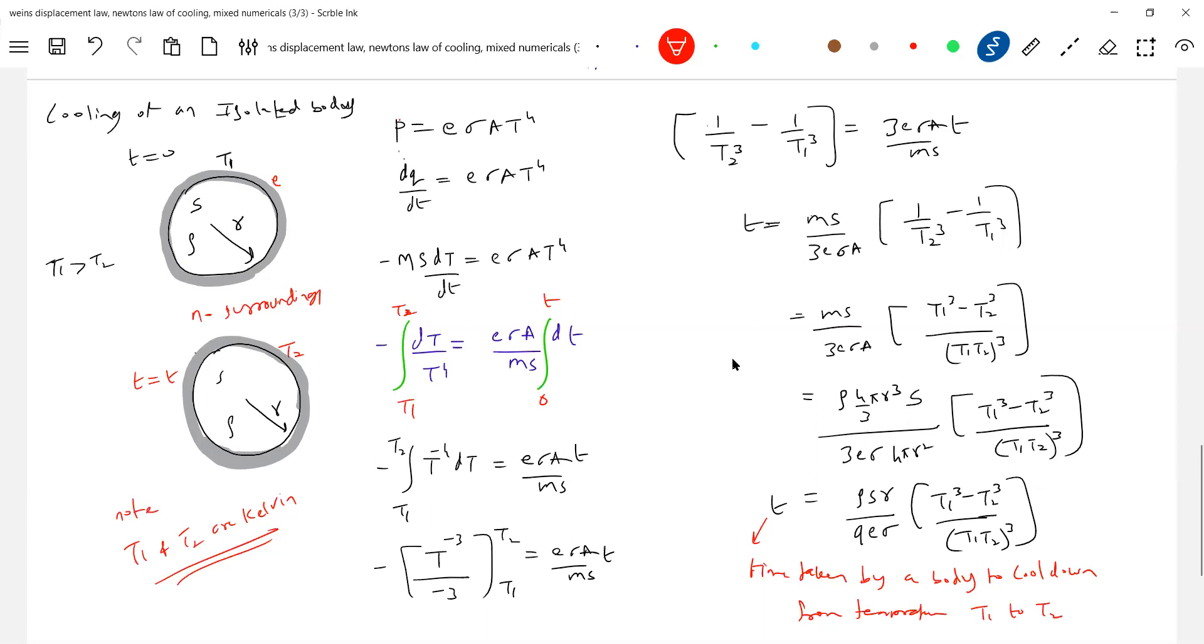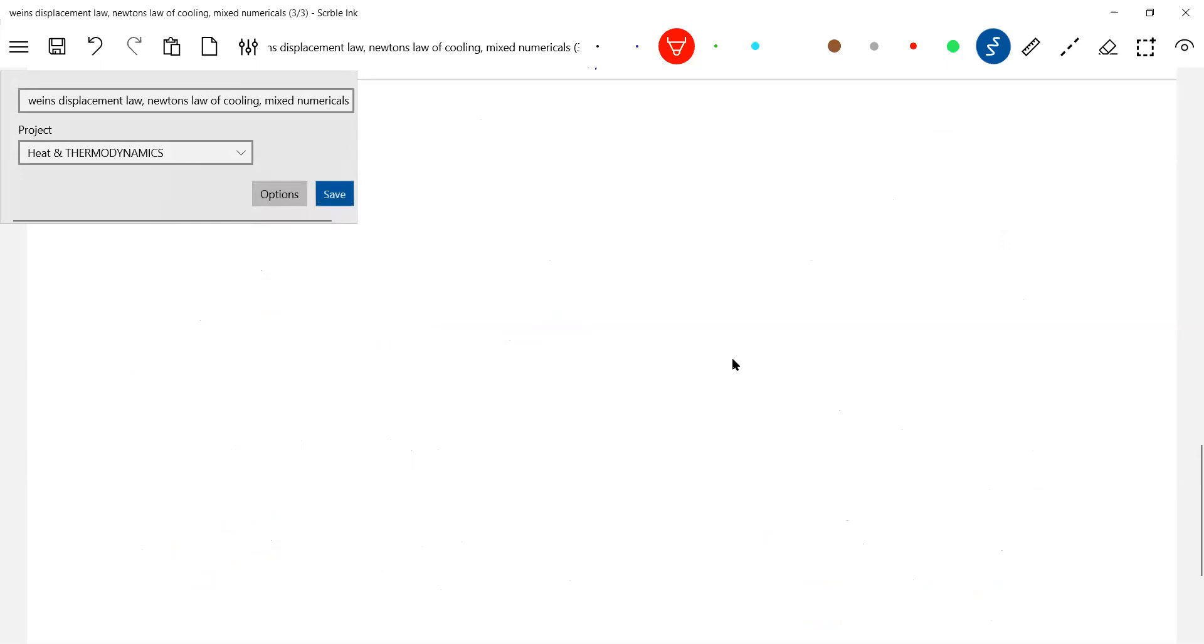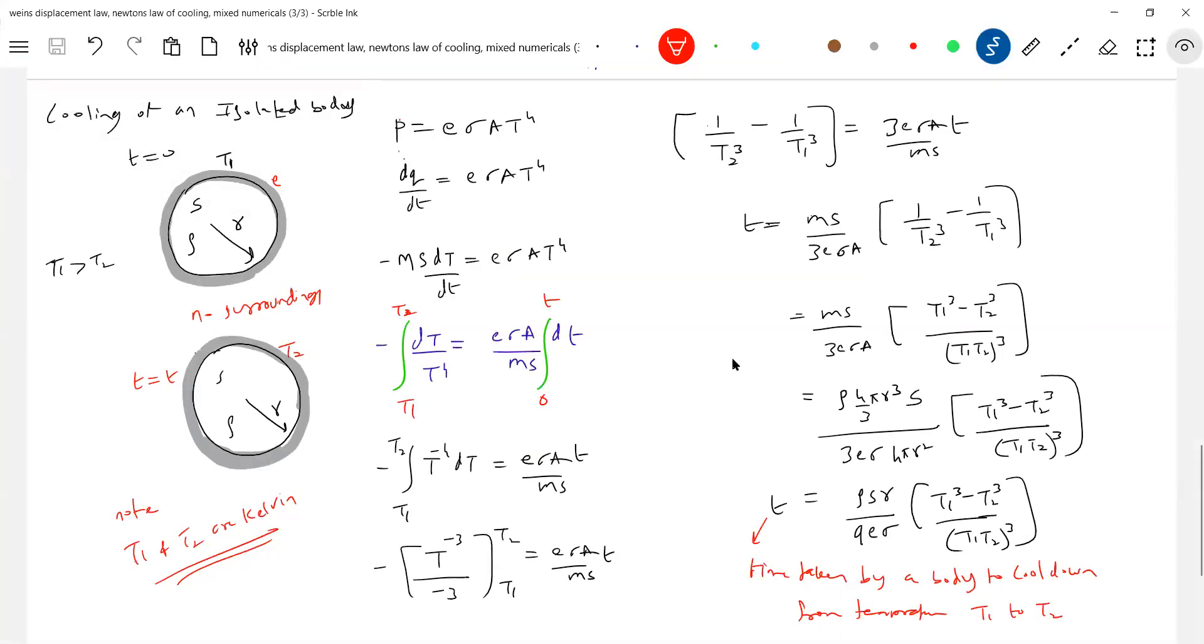So this is about the isolated body, like cooling of stars. I think we can apply this method, the time taken by the star to cool down. There is a formula what we can apply. Now, to compare two spheres, the material, the radius, and the emissivity will determine what is the time taken.